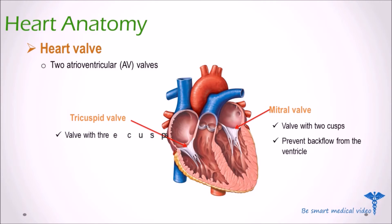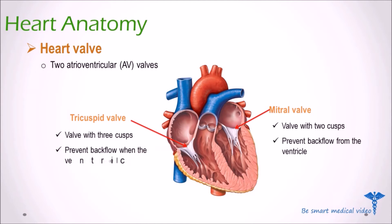The tricuspid valve, with three cusps, lies between the right atrium and the right ventricle. It allows blood to pass from the atrium to the ventricle and closes to prevent backflow when the ventricle contracts.